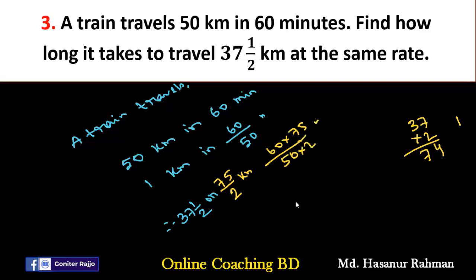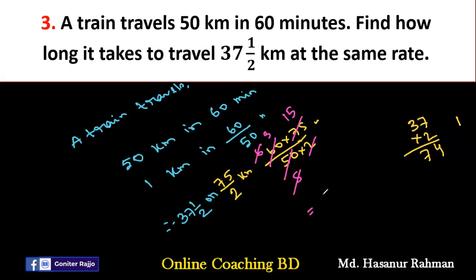Now calculate: 60 and 50 are both divisible by 10, giving 6 by 5. Then 6 divided by 2 is 3. And 75 divided by 5 is 15. So the final answer is 3 multiplied by 15 = 45 minutes.